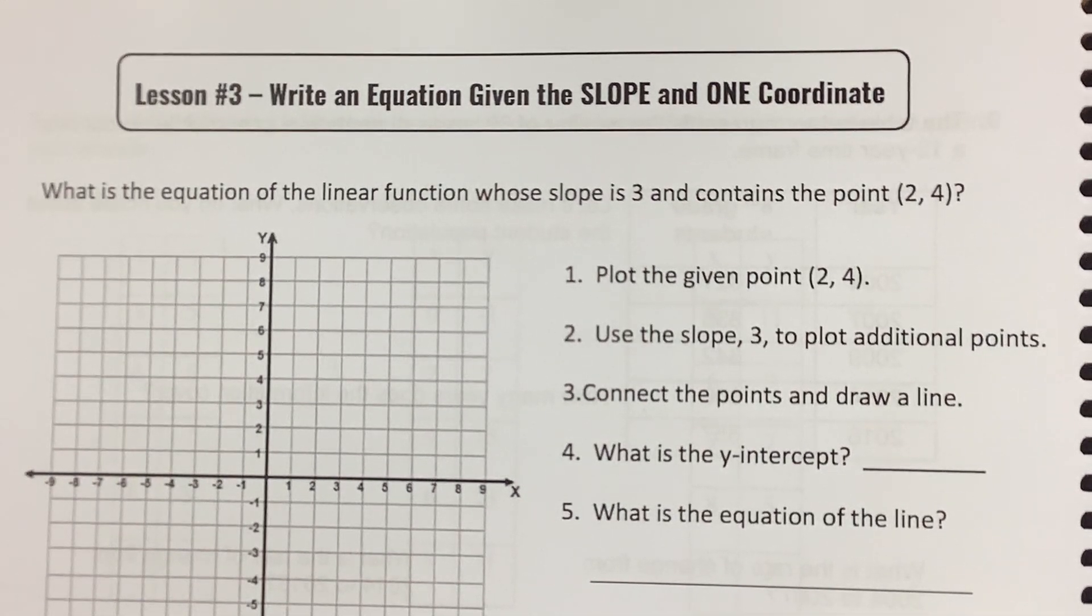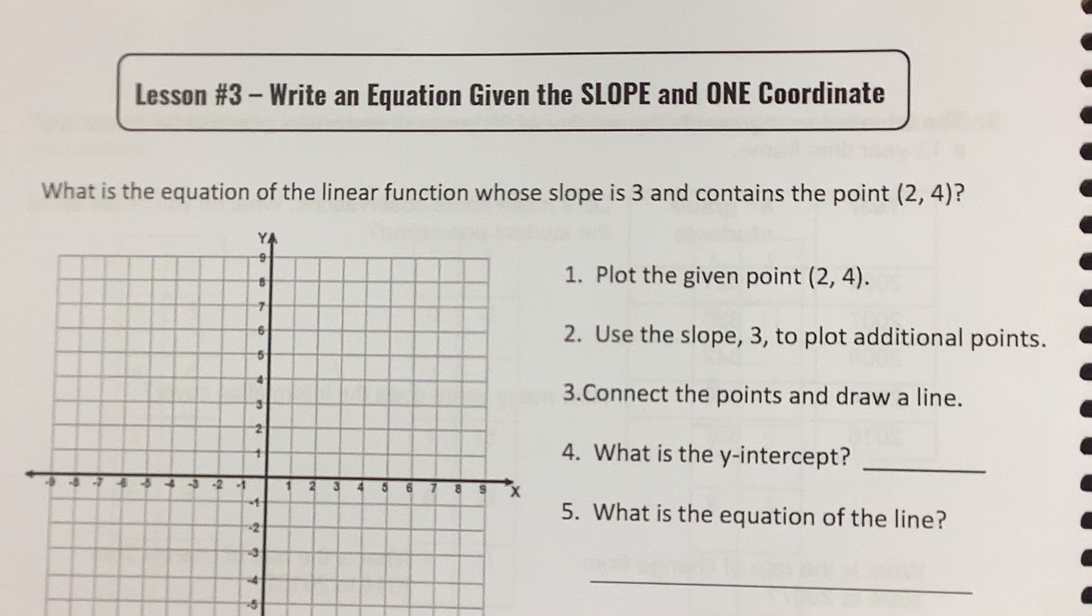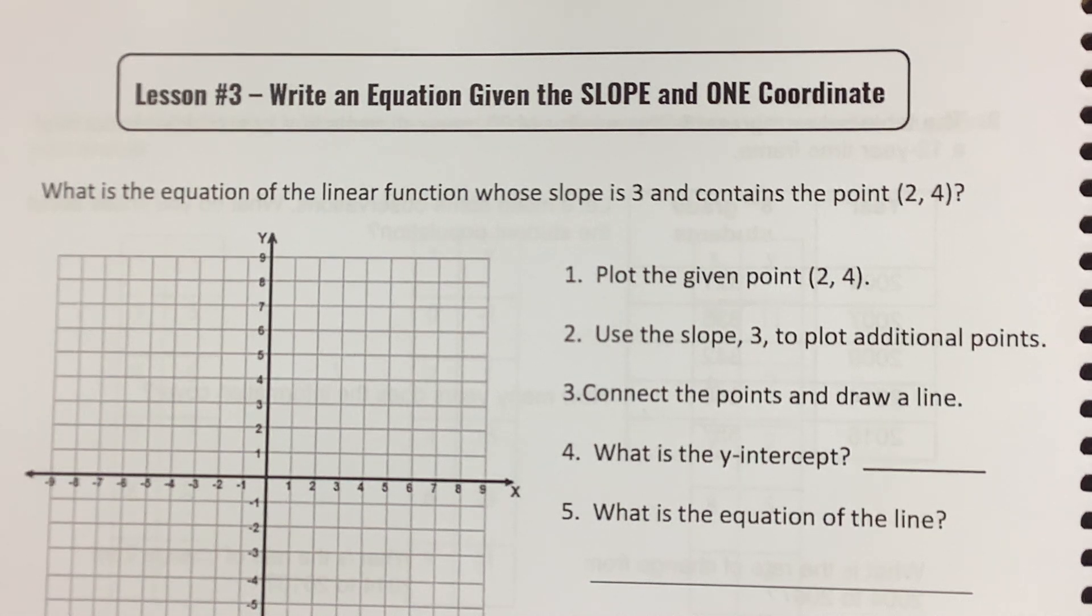Welcome back to Low Stress Math with Mrs. Bono. We are in Book 2, Chapter 3, Writing Linear Equations and Functions, Lesson 3. Write an equation given the slope and one coordinate. I would prefer to say coordinate point, but let's go with that.